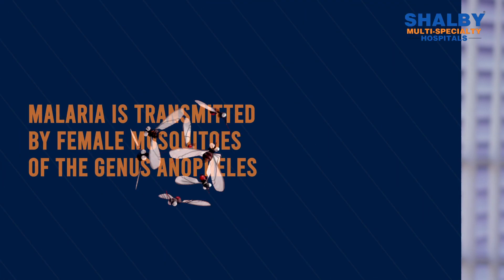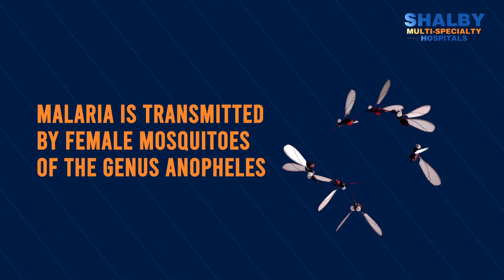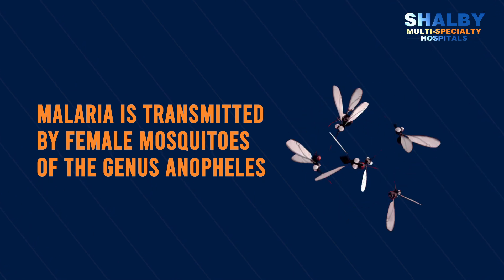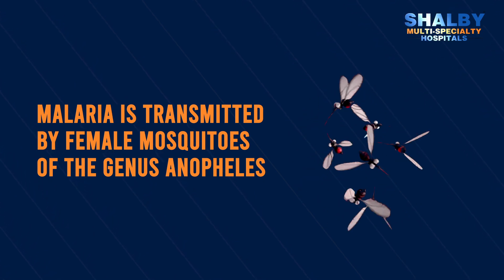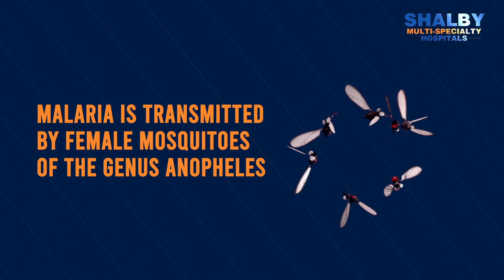Malaria basically is a parasitic infection. Malaria is a preventable and treatable disease. It is being transmitted by the female Anopheles mosquitoes.